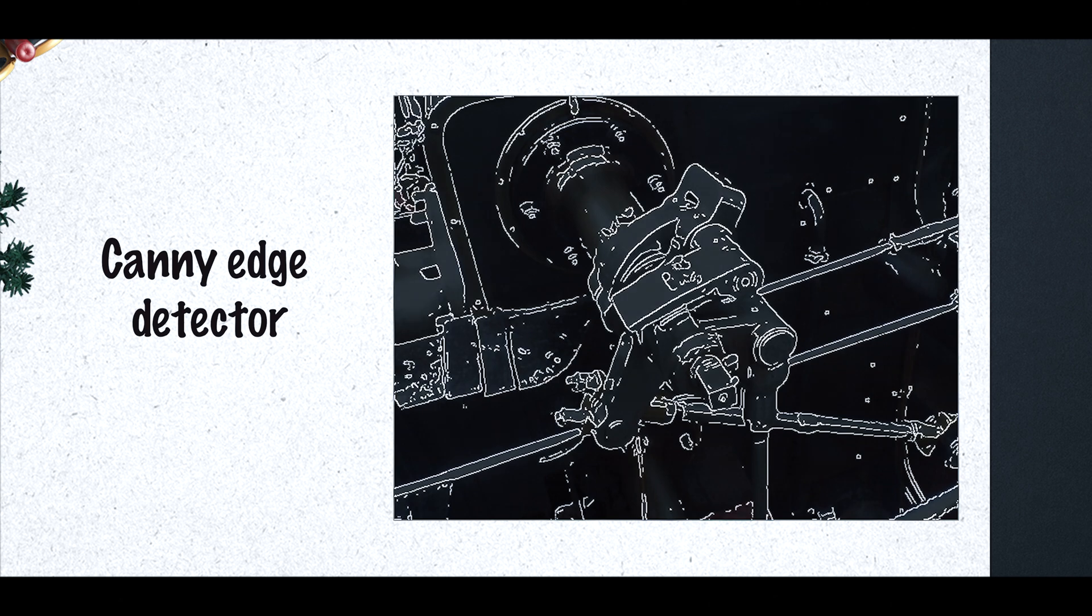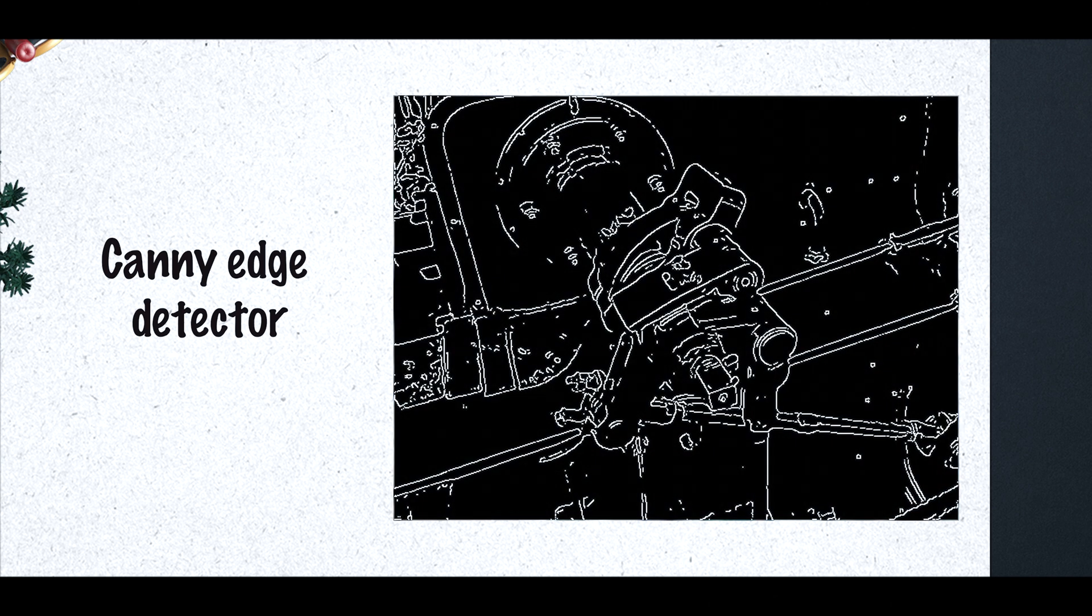Fast-forward to 1986, and we get another breakthrough: The Canny Edge Detector. John Canny, an Australian computer scientist, figured out how to make computers find clean, precise edges in images. But here's the thing. While this was impressive for its time, it was still working within the framework of statistics and rules, which was unable to fully capture the complexity of the real world. It became clear that the field of computer vision needed something more sophisticated.